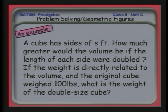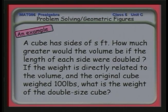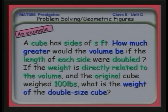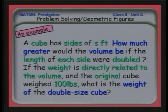A cube has sides of s feet. How much greater would the volume be if the length of each side were doubled? If the weight of the cube is directly related to the volume, and the original cube weighed 100 pounds, what is the weight of a double-sized cube?